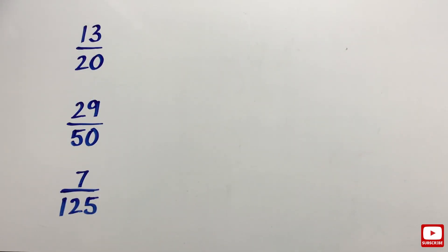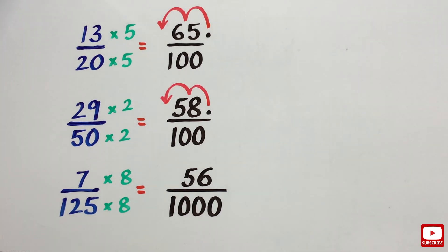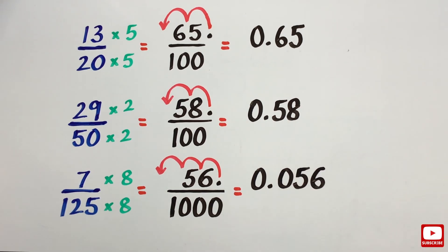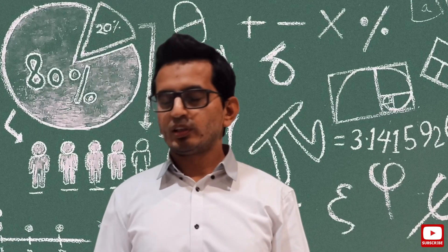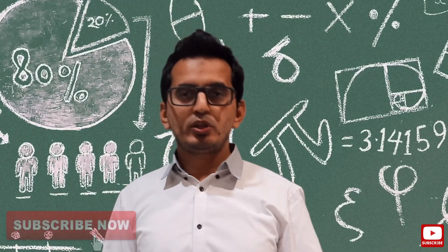So in order to convert any fraction into its decimal form, we rewrite the fraction by multiplying so that the denominator is a power of 10. And once we rewrite the fraction with the denominator as a power of 10, all we need to do is move the decimal point accordingly. In doing so, we get the required decimal form of the fraction. I hope you enjoyed learning from this video. Thank you for watching — more videos will come.